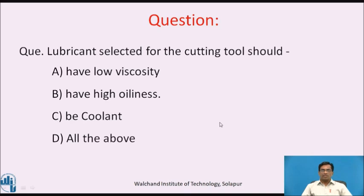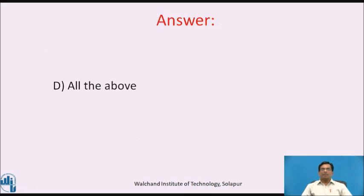At this point, pause the video and answer this question: A lubricant selected for a cutting tool should — A) have low viscosity, B) have high oiliness, C) act as a coolant, or D) all of the above. The answer is D — all of the above properties are expected.